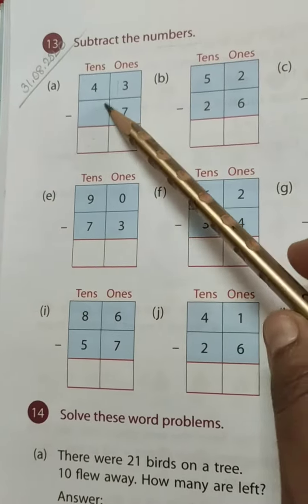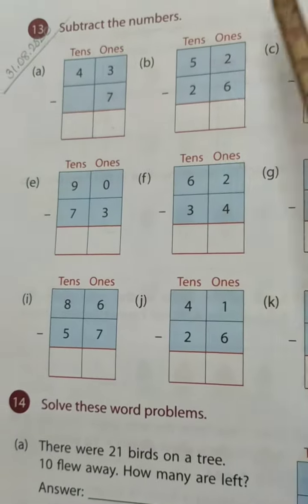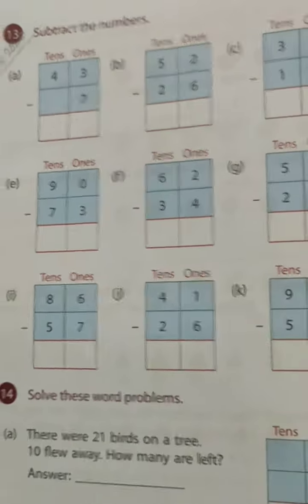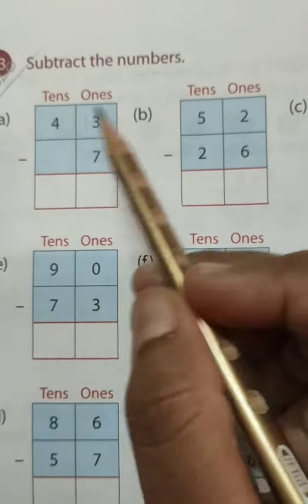Today we do this exercise, exercise number 13. Subtract the numbers. So this is all our subtraction with borrowing.